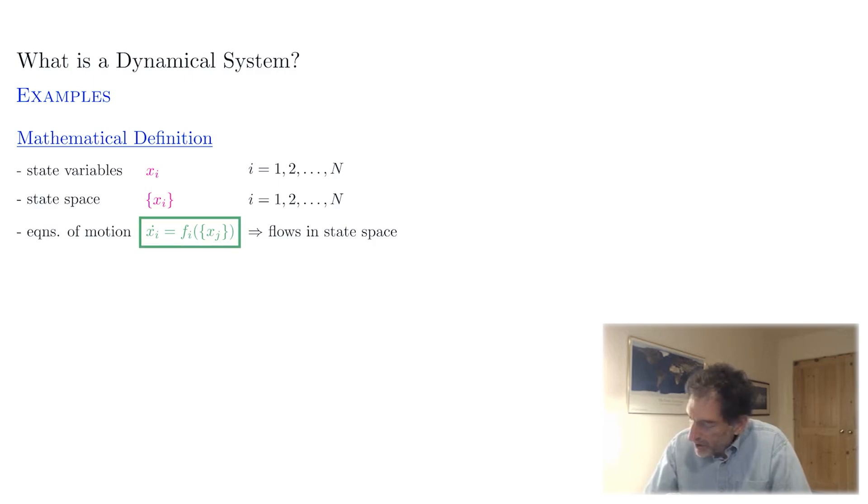A given point in state space tells us what are the variables of the system, and as the system evolves, then this point in state space will move around. What we're interested in understanding is how this point moves around, and this is what we call flows in state space.